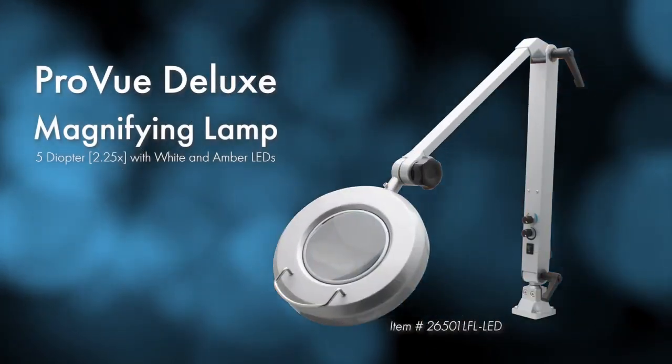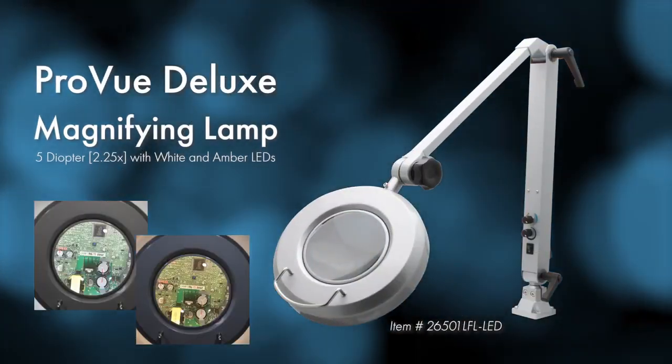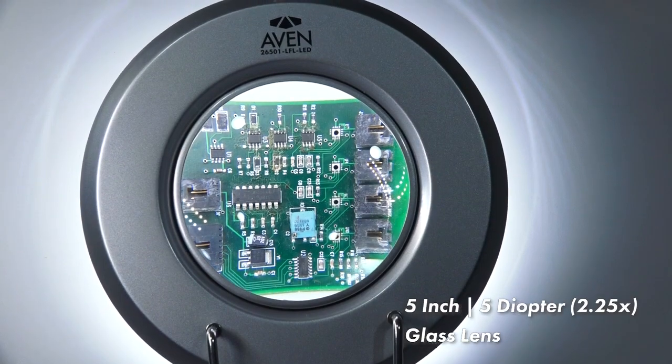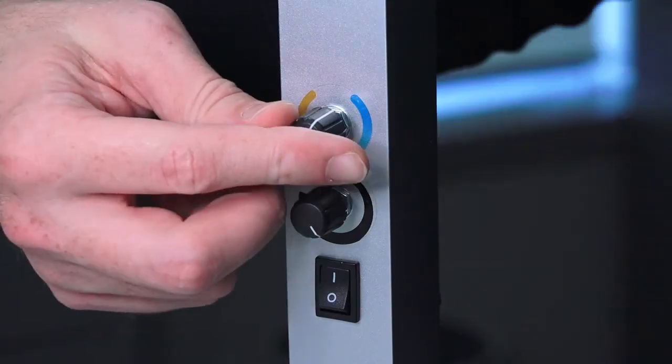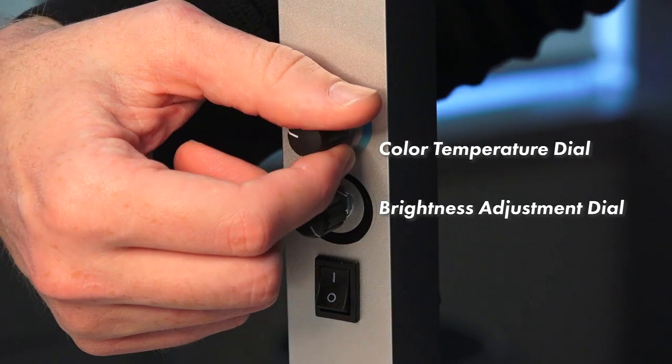The next one is the ProView Deluxe. This is also a round lens that comes in a 5 diopter version. The nice differentiator on this one is it has a brightness and a color adjustment.